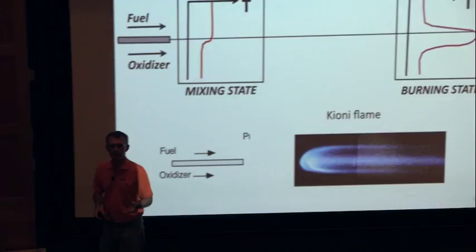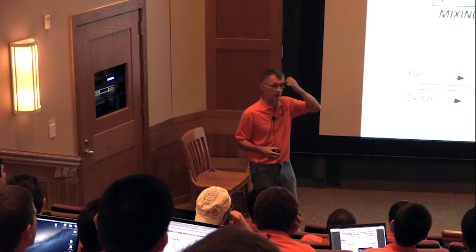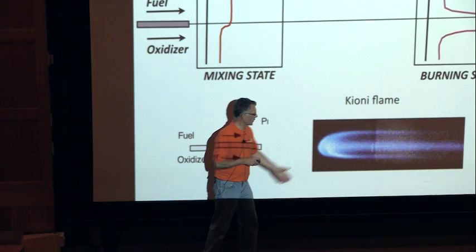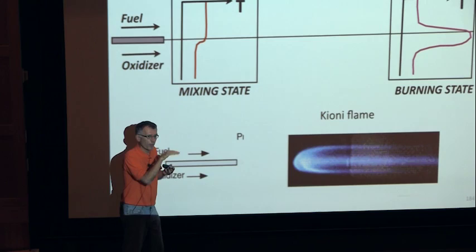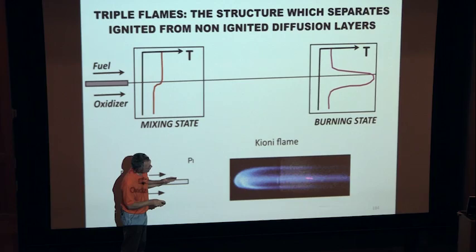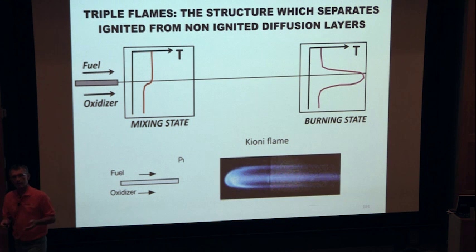The triple flame was discovered maybe 10 to 15 years ago — we didn't even know it existed before. When people first saw these pictures, they were surprised. This thing is moving; it has to move because the flow is going that way. It moves faster than a premixed flame — it's the small animal that allows the flame to stay there. If you increase the speed too much, it goes away and the flame quenches. It has been proven by many experiments that this structure is necessary for the diffusion flame to establish downstream.